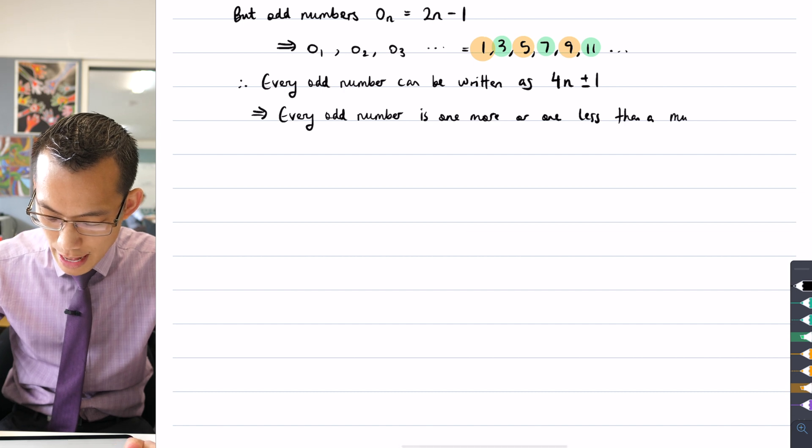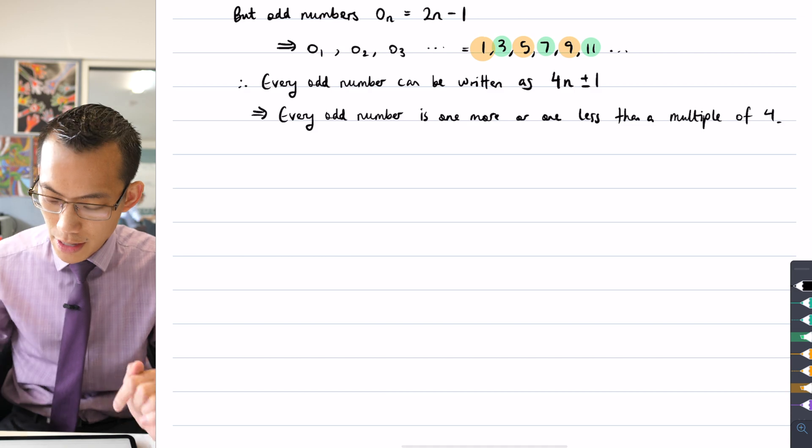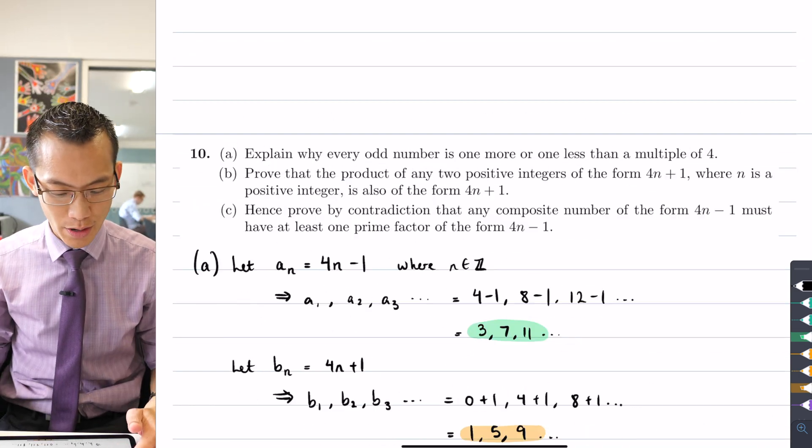And I have a single piece of notation which combines both of those together, so I can say 4N plus or minus one. And what that implies is that every odd number is either one more or one less than a multiple of four. All right, so I'm pretty happy with that explanation and I hope you're convinced as well. So I'm going to pull a full stop there and see how part A leads on to the rest of the question.